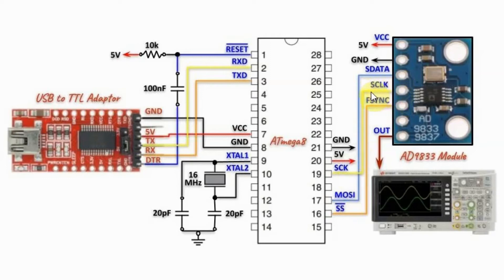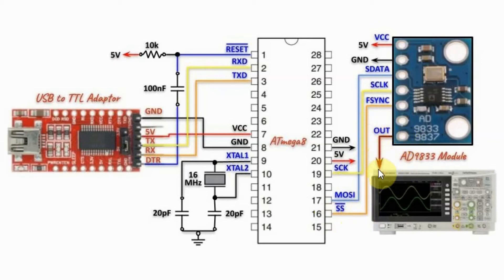The serial clock is connected to the serial clock of the controller, and the F-sync line from the module is connected to the slave select line of the controller. The analog waveform output from the module is connected to a scope.